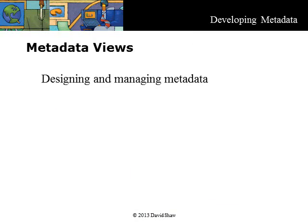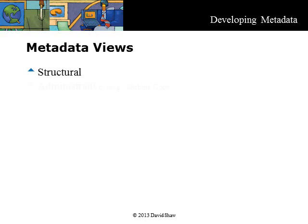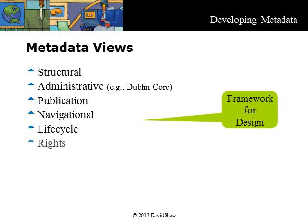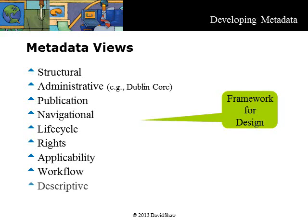Metadata views or types give us a framework for thinking about, designing, and managing the metadata. Here are the ones we will discuss in this module. There can be a lot of overlap between these groups, but it's not important to resolve these issues — the groups just give us a framework and checklist to help us design the metadata. The metadata term 'author,' for example, might be used in the administrative, publication, and rights management views. Or, in your organization, the administrative view might use a metadata term 'creator,' and the publication view uses 'author.' You are already familiar with structural metadata, so we will look at it first. Administrative and publication views are often closely related, so we will look at them after that.